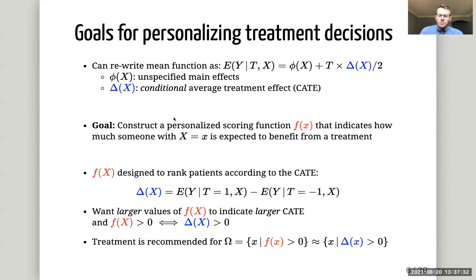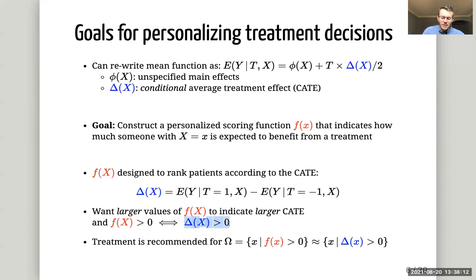Our goal is to estimate or construct a scoring function F that indicates how much someone with a given level of covariates is expected to benefit from a treatment. This F is designed to rank patients according to the magnitude of their conditional average treatment effect — larger values of F indicate larger conditional treatment effects. Positive values of F indicate positive conditional average treatment effects, meaning the treatment is beneficial on average for someone with covariate values X. So we would recommend the treatment for all patients with covariate values X such that this scoring function is positive.